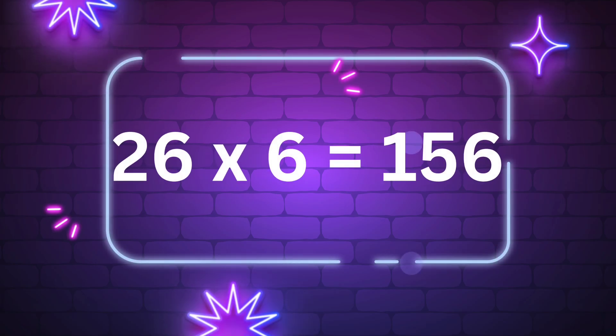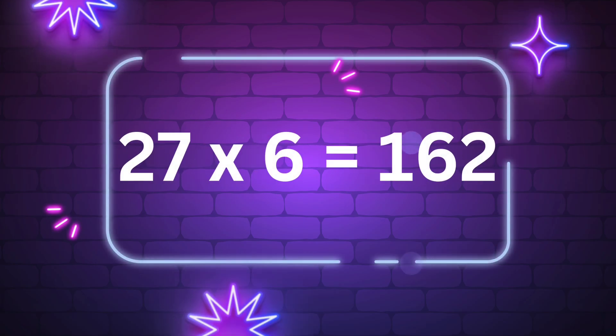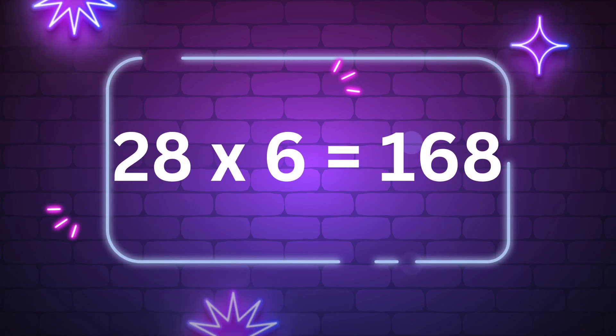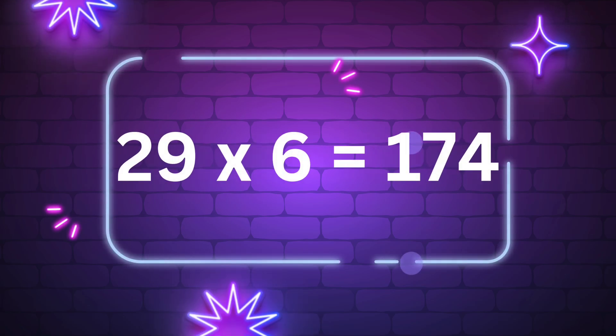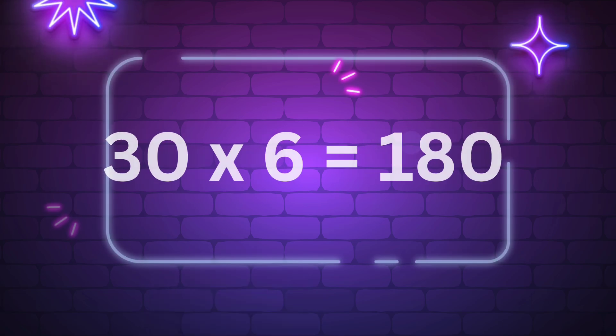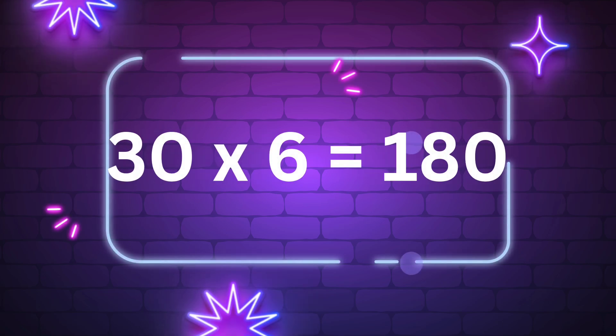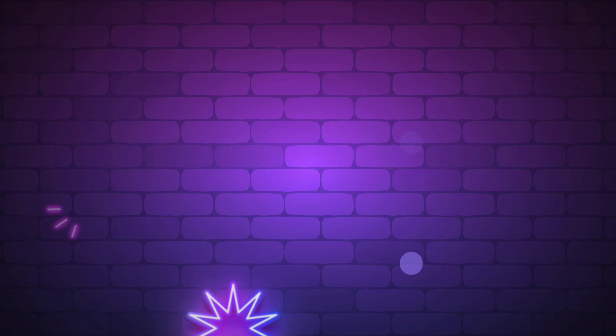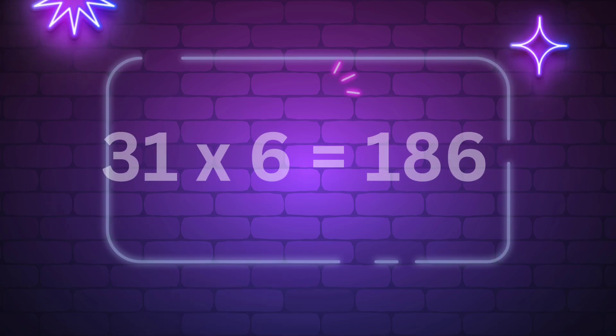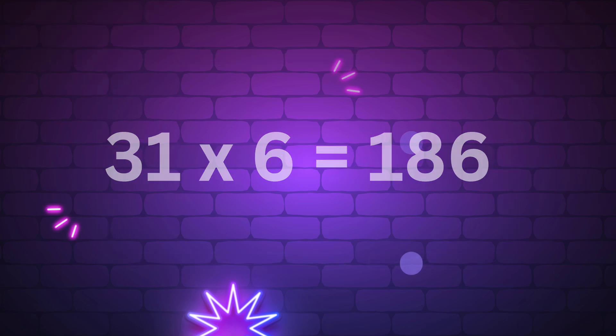Twenty-six times six is 156. Twenty-seven times six is 162. Twenty-eight times six is 168. Twenty-nine times six is 174. Thirty times six is 190.